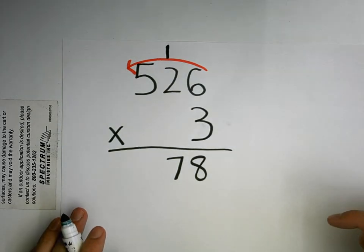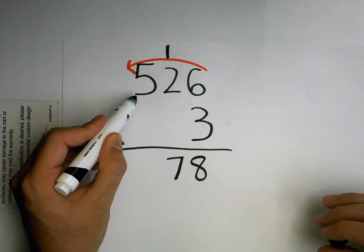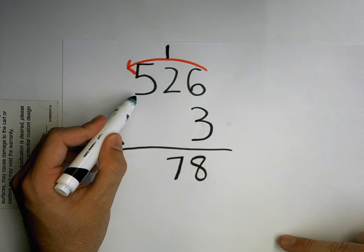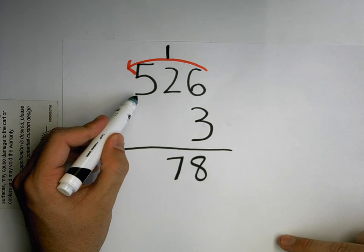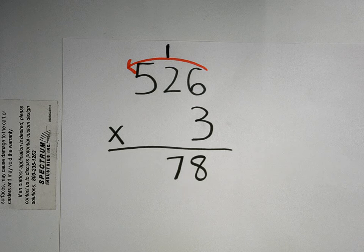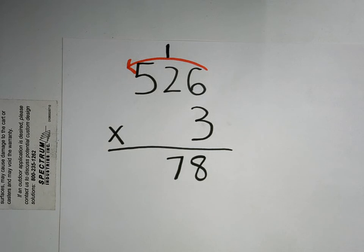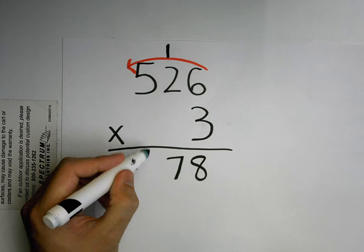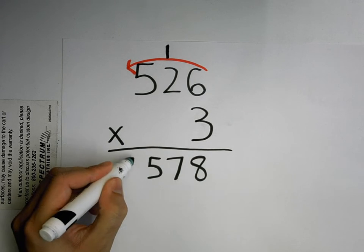Now, am I done? No, because we added an extra step this time. We added the hundreds place right there. So who can tell me what two numbers I'm going to multiply and what the answer is going to be? Andrew. 5 and 3. And what's the answer going to be? 15. So I don't have any more numbers over here. There's my 15.